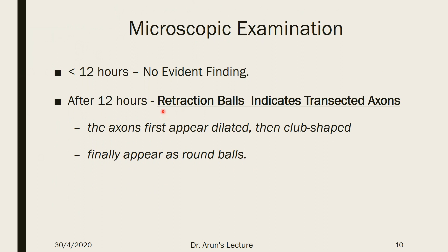In microscopic or histopathological examination of suspected brain tissue, if the gap between the incident and sample collection is less than 12 hours, there will be no evident changes. If the time lapse is more than 12 hours, retraction balls will be present, indicating transected axons due to injury. Retraction balls first appear dilated, then become a globe shape, and finally attain a round ball structure. If the individual continues treatment and is hospitalized, retraction balls begin to decrease, usually 2–3 weeks after injury. Clusters of microglial cell invasion appear, followed by astrocytosis and demyelination.